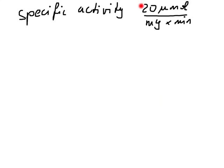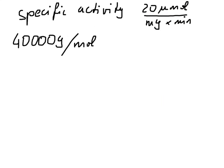Now, if we want to calculate the turnover number, we use our specific activity. We know that the specific activity is 20 micromoles of substrate per milligram of enzyme per minute. All we need to do is convert this milligram of enzyme into moles of enzyme. We know that the molecular mass of the enzyme is 40,000 grams per mole. So we can now get the conversion — again using dimensional analysis.